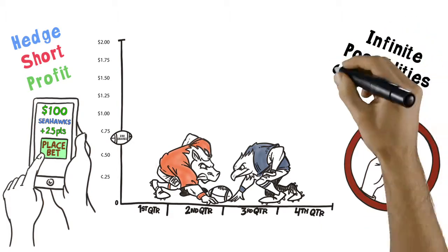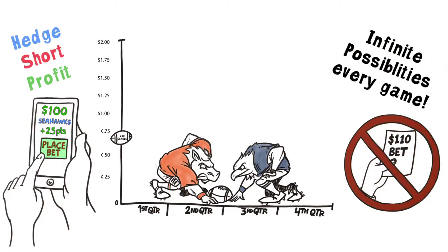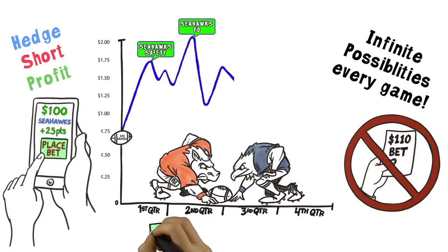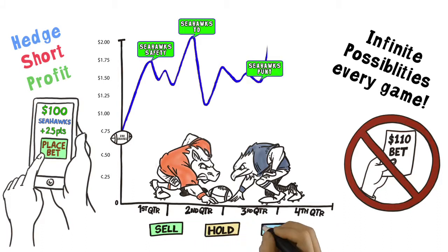Infinite possibilities in a 60-minute game. Once the game begins, the price of your bet changes along with the action of the game. Based on this new price, you can sell shares for profit, hold firm, or buy more.